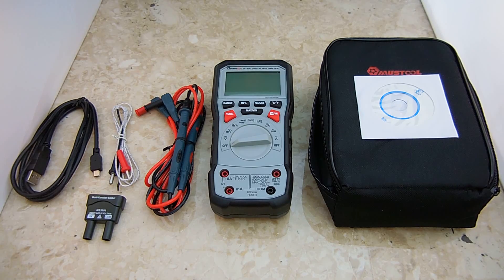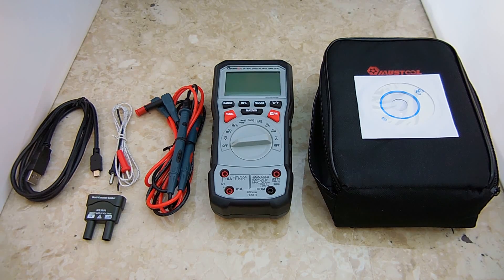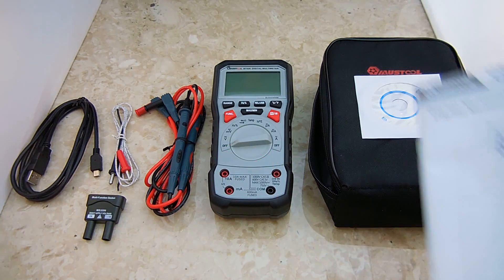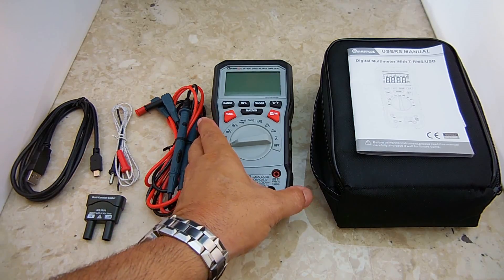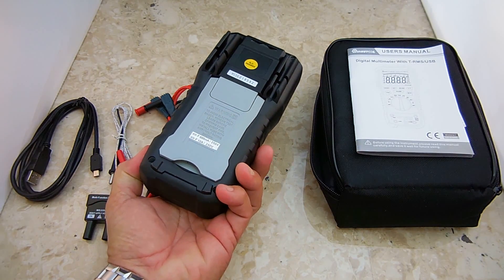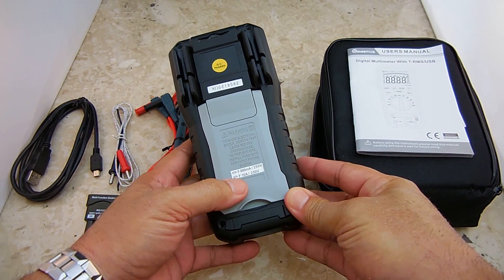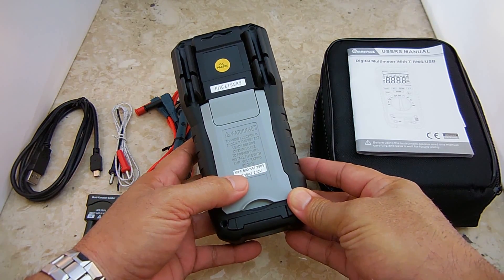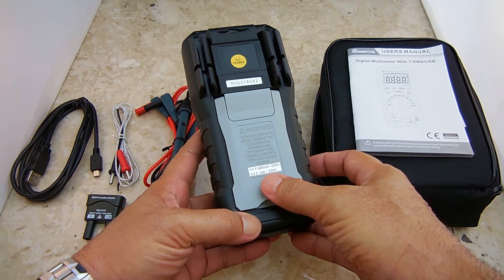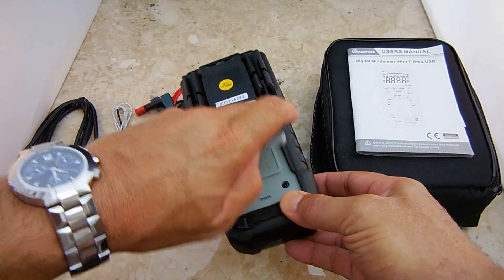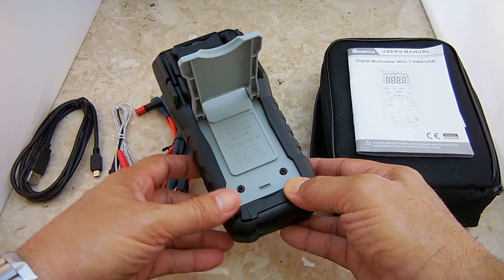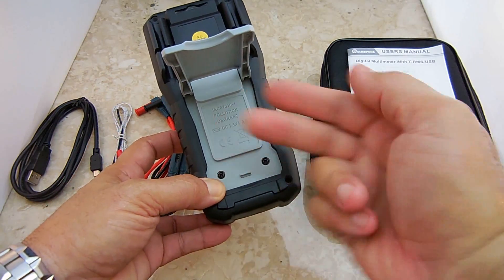This particular unit stores data which can be analyzed later using the included software. You're able to go back and look at all the measurements you took on the computer, view graphs of the measurements, and look at this real-time on your computer. You have a 600 milliamp 250 volt fuse and a 10 amp 250 volt fuse. Under this cover is where the four AA batteries are located.